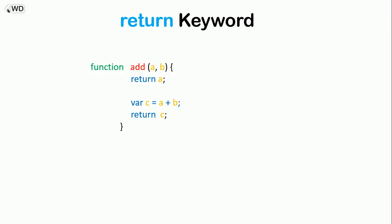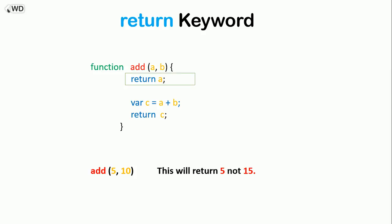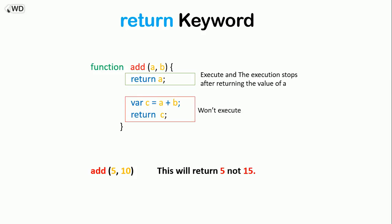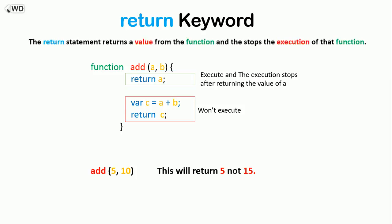Now let's look at the return keyword. Say we have a function 'add' that takes two parameters. The first line returns a, the second initiates variable c with a plus b, and then returns c. When we call add(5, 10), this will return 5, not 15. Why? Because the first line executes and the execution stops after returning the value of a — the remaining lines won't execute. The return statement returns a value from the function and stops its execution, so any code after return will not execute.